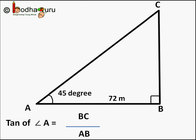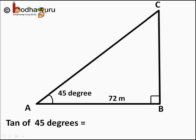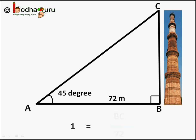We know tan of angle A is equal to BC by AB. Angle A is equal to 45 degrees. So tan of 45 degrees is equal to BC by 72, and tan of 45 degrees has the value 1.